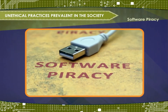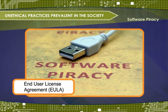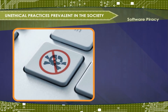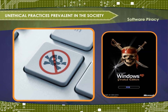When you purchase a commercial software package, an End User License Agreement, or EULA, is included to protect that software program from copyright infringement. Typically, the license states that you can install the original copy of software you bought on one computer, and that you can make a backup copy in case the original is lost or damaged.